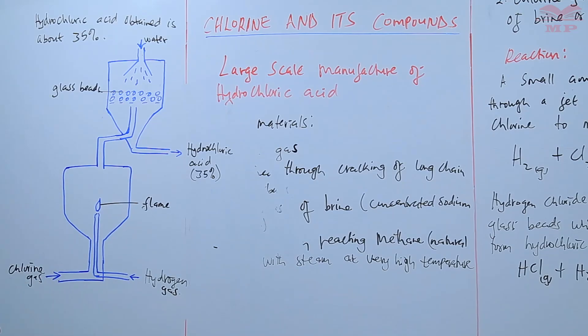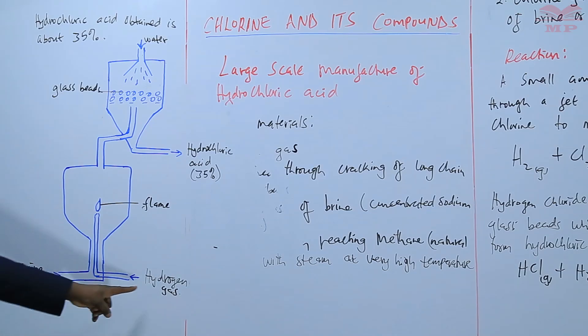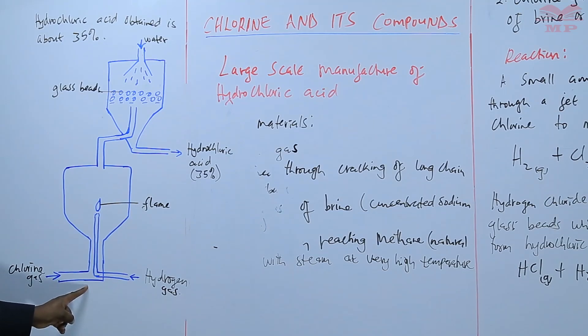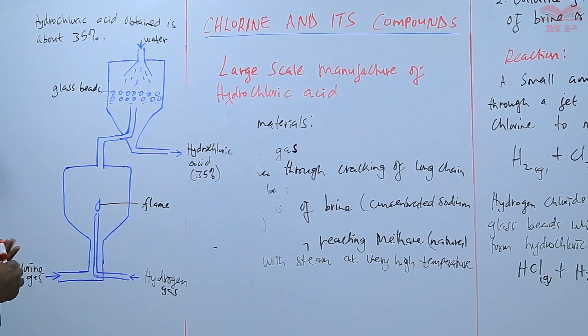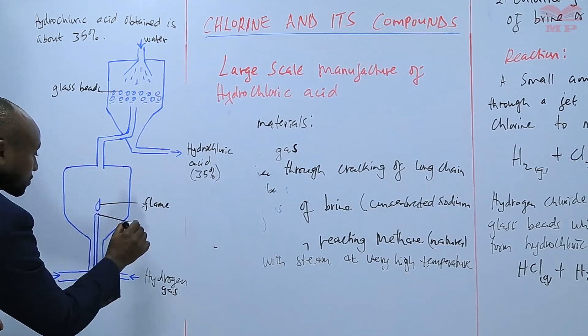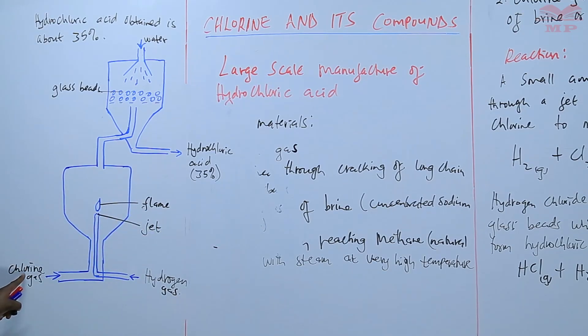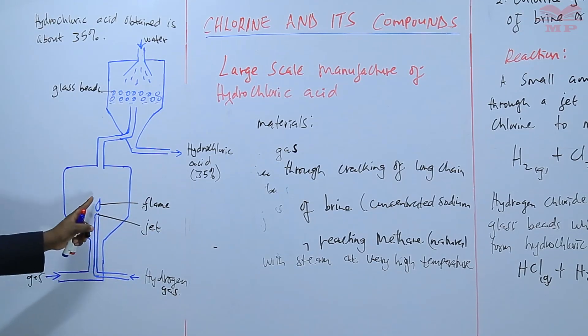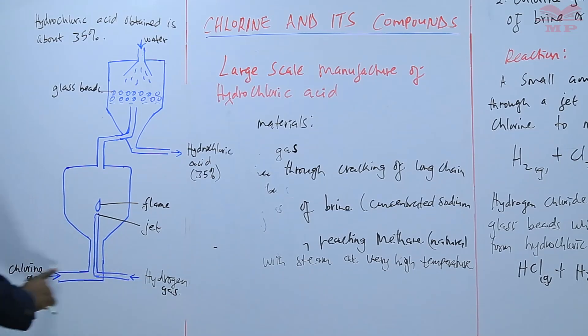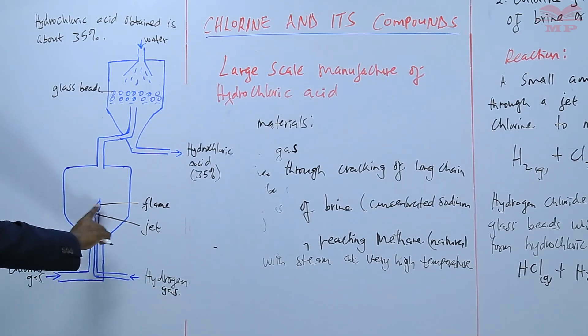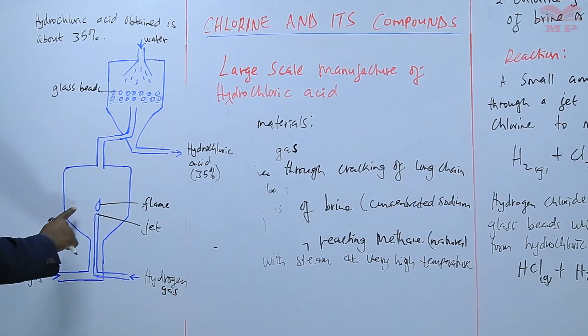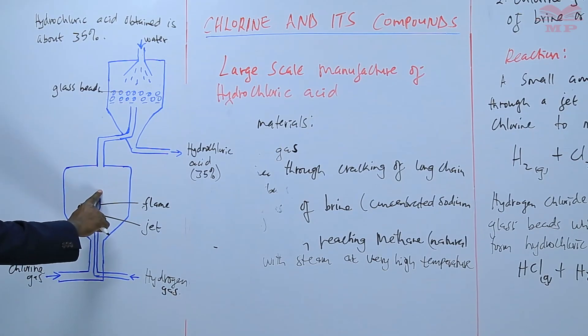So the diagram for the manufacture of hydrochloric acid is as shown. The hydrogen gas is one of the raw materials, chlorine gas is the other raw material. Small quantities of hydrogen gas should be brought via a jet. So the jet here allows very small quantities of the gas out, and then this combines with a lot of chlorine. So hydrogen gas burns with excess chlorine and the gas that is formed here is hydrogen chloride, as we have seen in the equation.